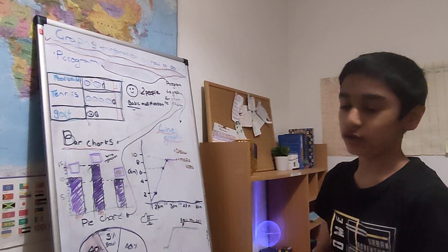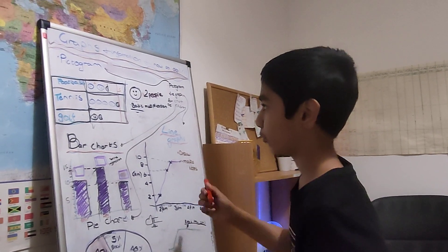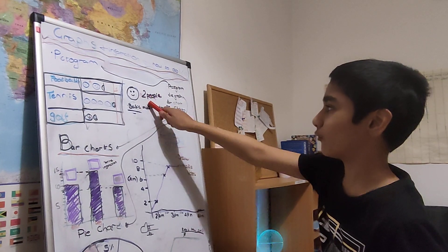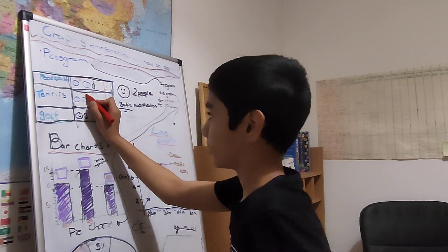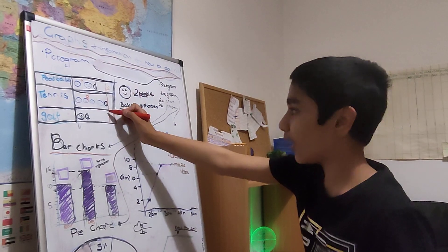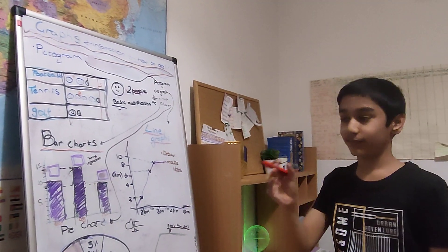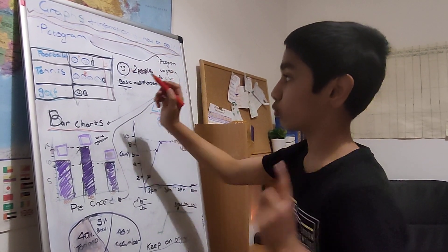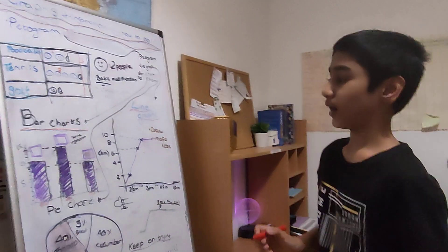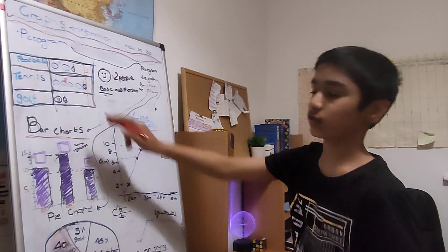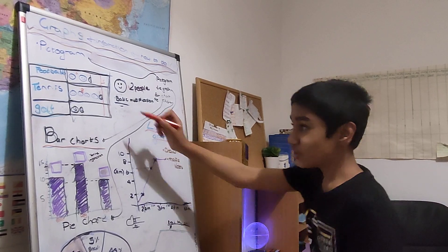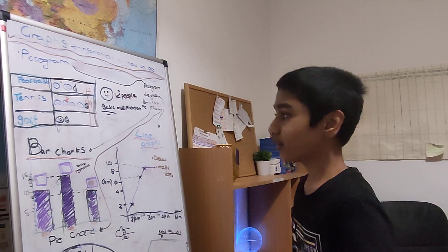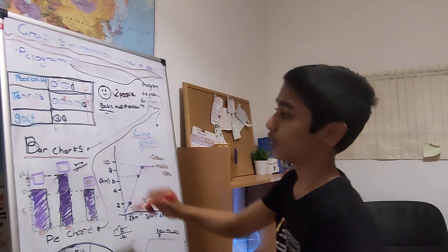Next we go on to tennis. Using basic multiplication: there are four smiley faces, so four times two is eight people. Then we have half a smiley face again — half of two is one person. Using addition, eight plus one is nine. So nine people in the survey like tennis.